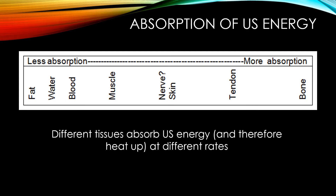Some tissues that have less absorption of ultrasound energy would be things like fat, water, and blood. Ultrasound passes through those fairly easily without much absorption, so it can't heat those very well. The things that have more absorption of ultrasound are more dense tissues, like tendon, ligament, or bone. Those denser tissues will absorb more of the ultrasound and therefore heat up much faster than tissues that don't absorb the ultrasound energy as much.